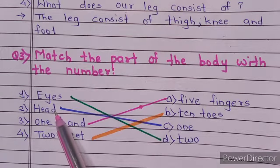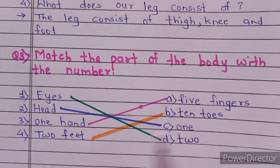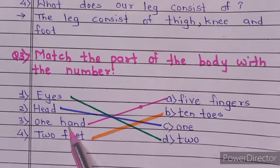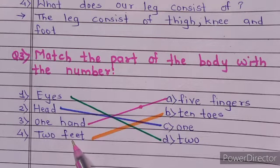We have head, one head, so match it with option number C. One hand, how many fingers we have? Five fingers. Two feet. How many toes we have? Ten toes.